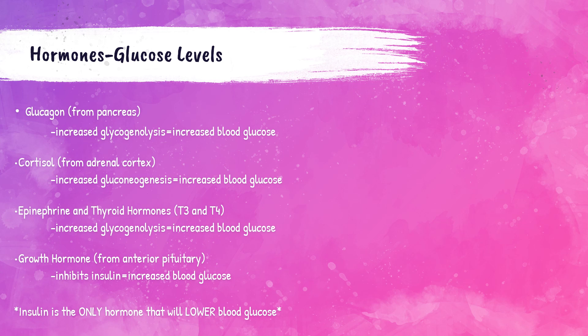Glucagon is produced in the alpha cells of the islets of Langerhans of the pancreas and increases blood glucose by stimulating glycogenolysis. Cortisol is produced by the adrenal cortex and increases blood glucose by increasing gluconeogenesis. Epinephrine is produced by the adrenal medulla and increases glycogenolysis, thereby increasing blood glucose. Thyroid hormones T3 (triiodothyronine) and T4 (thyroxine) also increase blood glucose via glycogenolysis. Growth hormone from the anterior pituitary increases blood glucose by inhibiting insulin. All of these hormones increase blood glucose levels; insulin is the only hormone that actually lowers blood glucose.